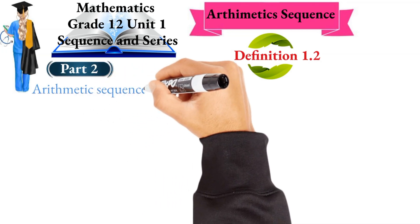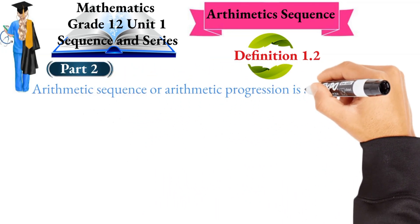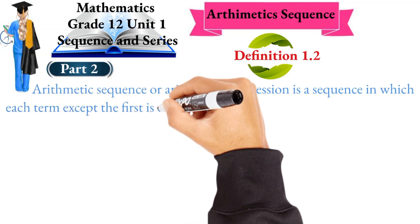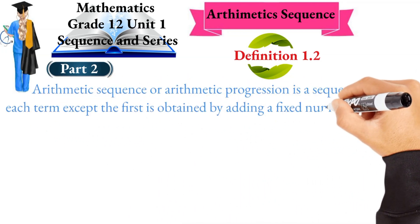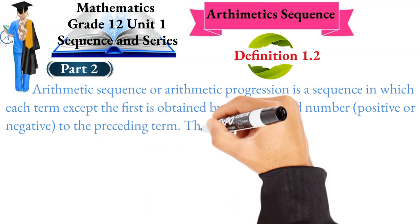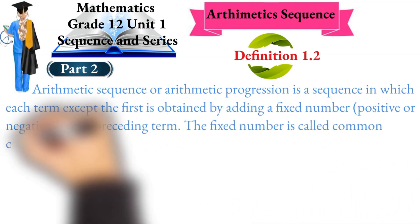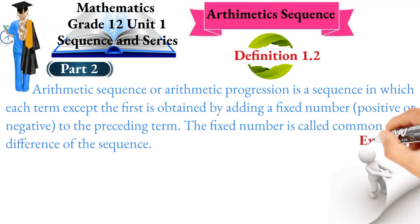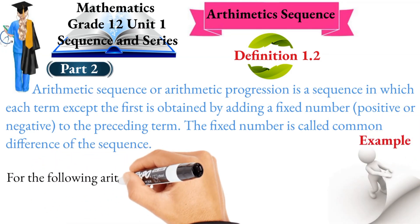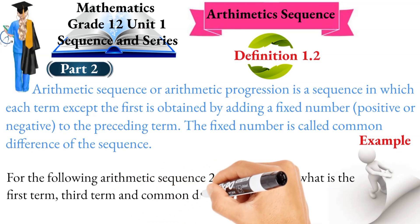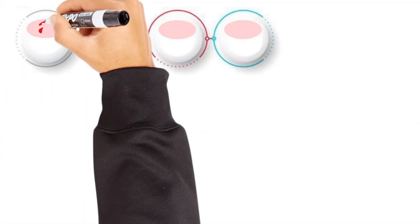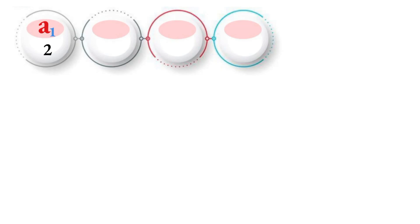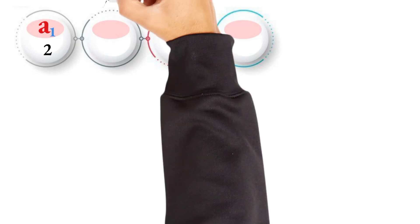An arithmetic sequence, or arithmetic progression, is a sequence in which each term, except the first term, is obtained by adding a fixed number — positive or negative — to the preceding term. That fixed number is called the common difference of the sequence. In an arithmetic sequence, the common difference can be positive or negative.